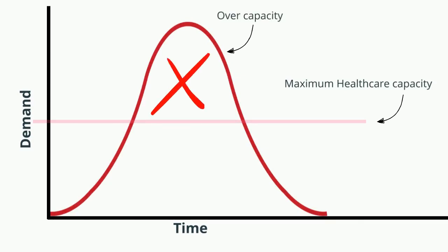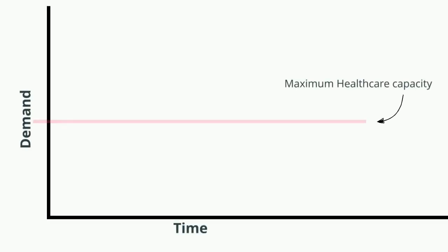But thankfully, we can do something about it. When we take the appropriate steps to distance ourselves and wash our hands, we can slow the spread of the disease, and the curve goes from looking like this to something like this, meaning that everybody can get the care they need.